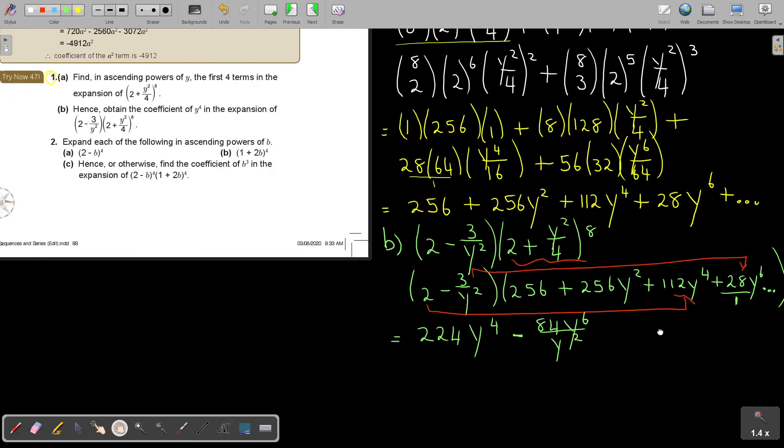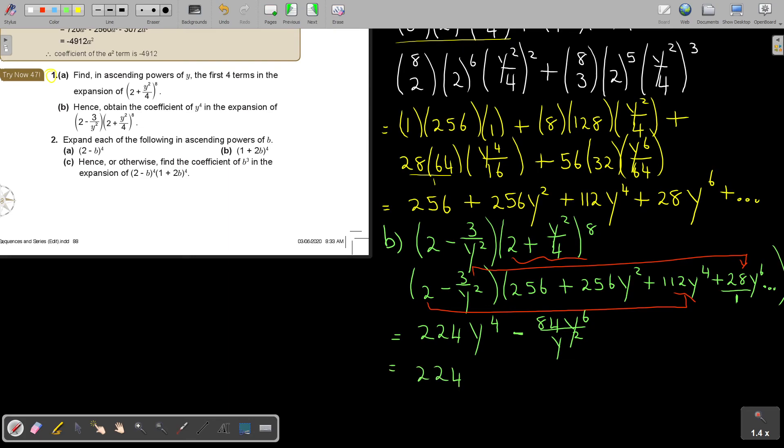So basically, if you did that, then, and I know as I said that I was doing that extra step just for explanation, because 6 minus 2 is then 4. So it's 84 y to the power of 4. And then I just subtract, 224 minus 84, and I get 140 y to the power of 4. But answer the question. Hence obtain the coefficient. So let's just go, therefore the coefficient of 140 y to the power of 4 is 140. And that is your final answer. Thank you.